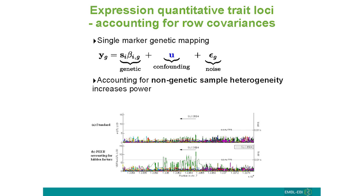One challenge in EQTLs is that for many genes, repeating a similar analysis for a gene on chromosome 7 using cis-associations - only proximal variants - we don't find any link. One reason is not population structure, which in EQTLs with small sample sizes is typically not a big issue, but rather non-genetic sample heterogeneity - other variations between individuals.